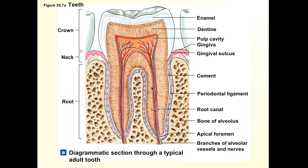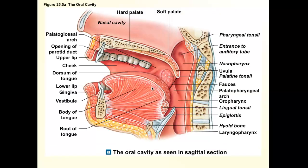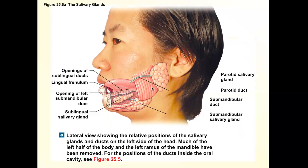You also have lingual tonsils at the base of your tongue. Now let's talk about salivary glands. You have six salivary glands total — two at the base of each ear, which are the parotid glands. The parotid is the largest salivary gland. It secretes amylase, which breaks down starches, and also secretes a lot of water to dilute the acids in your foods. Twenty-five percent of saliva comes from this gland.